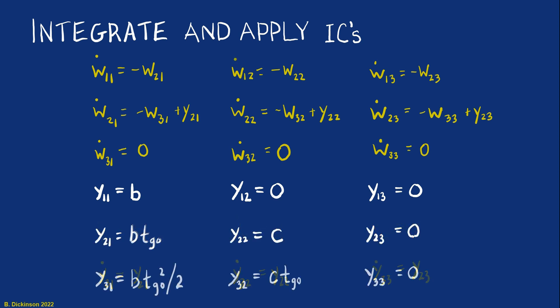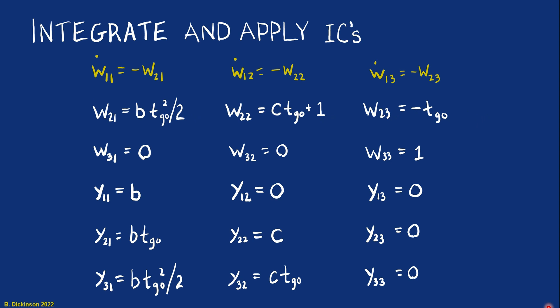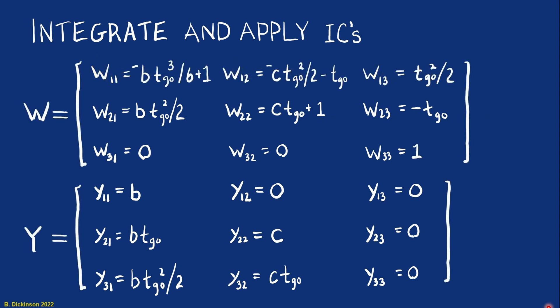And then we can do the final row in Y. And now going up to the third row in W. And finally then to the second row in W. And then the first row in W. Finally getting that, the integration, the result, W and Y.